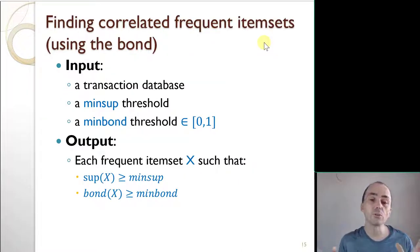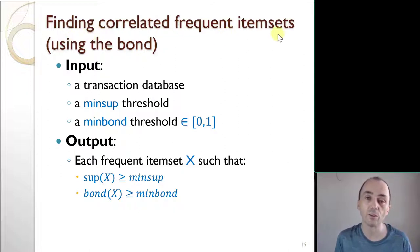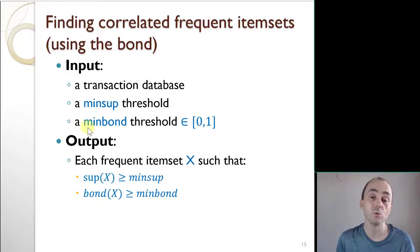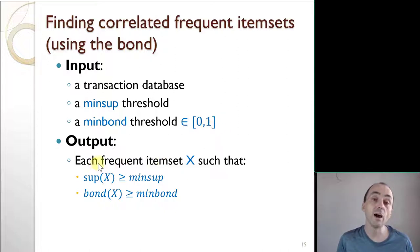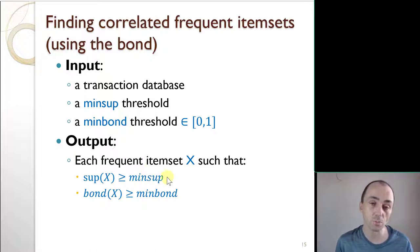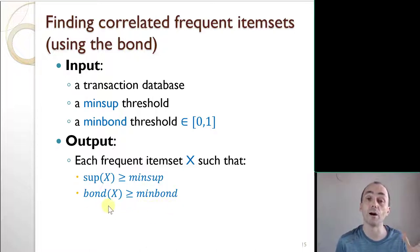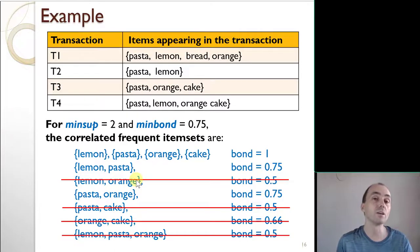Now, how can we use the bond to find correlated item sets? One task is finding correlated frequent item sets using the bond. The input is a transaction database, a minimum support threshold to find frequent item sets, and a new parameter — the minimum bond threshold — a value between 0 and 1. The output is all frequent item sets X such that the support of X is at least equal to the minimum support and the bond is at least equal to the minimum bond.